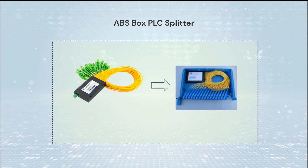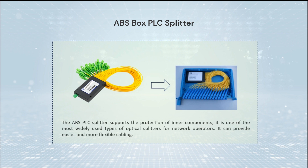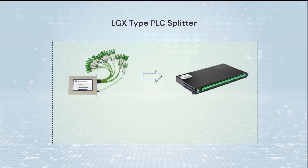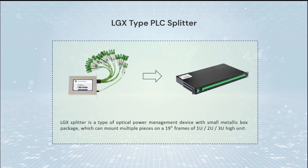The ABS PLC splitter supports the protection of inner components. It is one of the most widely used types of optical splitters for network operators. The LGX splitter is a type of optical power management device with a small metallic box package, which can mount multiple pieces on a 19-inch frame.